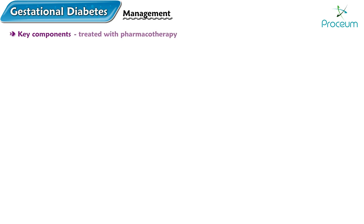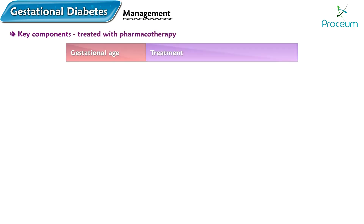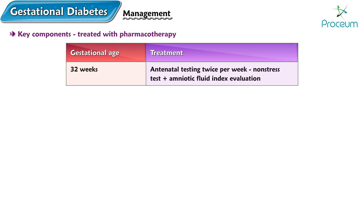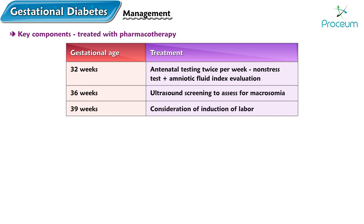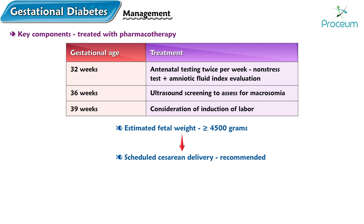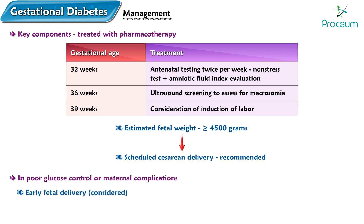Key components of the management of pregnancies with gestational diabetes mellitus treated with pharmacotherapy include: at 32 weeks gestational age, antenatal testing twice per week consisting of a non-stress test plus an amniotic fluid index evaluation; at 36 weeks, ultrasound screening to assess for macrosomia; at 39 weeks, consider induction of labor. In cases where the estimated fetal weight is greater than or equal to 4,500 grams, scheduled cesarean delivery may be recommended. In situations of poor glucose control or maternal complications, early fetal delivery should be considered after fetal lung maturity assessment and corticosteroid administration.